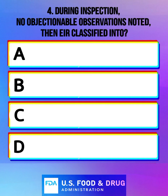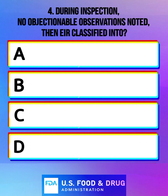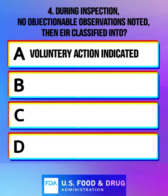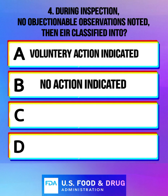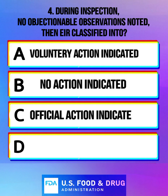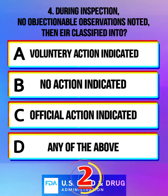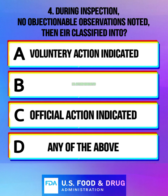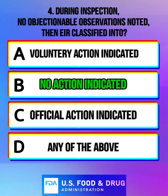During inspection, no objectionable observations noted. Then EIR is classified into: Option A: voluntary action indicated. Option B: no action indicated. Option C: official action indicated. Option D: any of the above. And the correct answer is no action indicated.